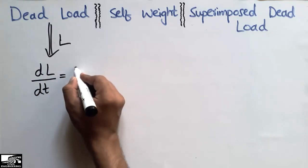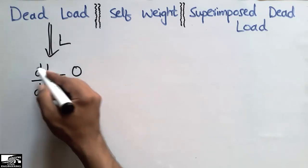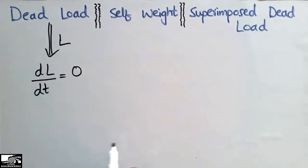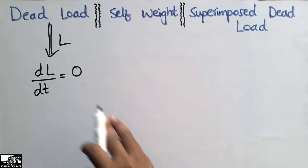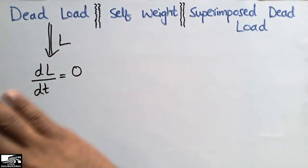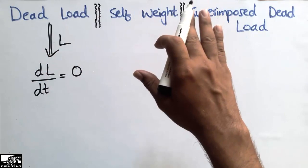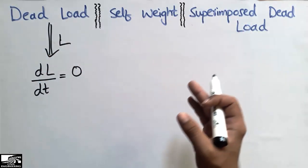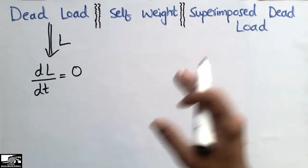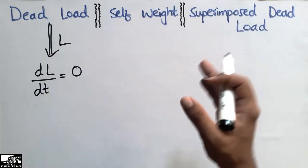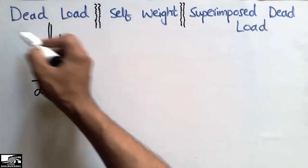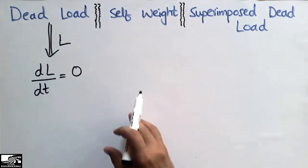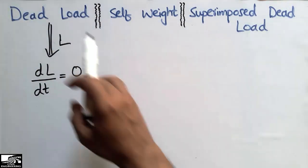it is the load which does not change with time — we call it the dead load. The derivative of the load with respect to time will be zero, because this load will always be constant on the building and never changes with time or with position.